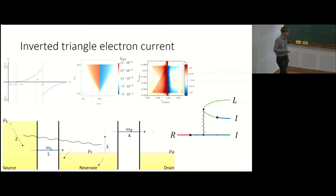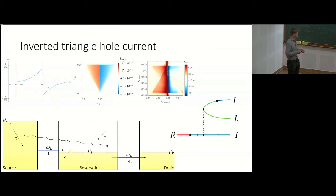In the final diagram, the hole of the electron-hole pair escapes through the detector, and we get a current exactly in the hole inverted triangle.